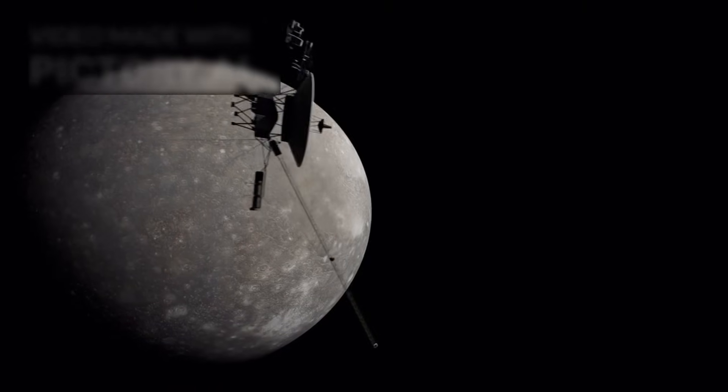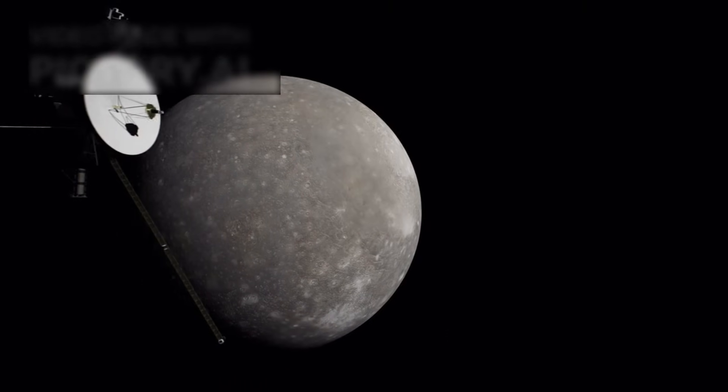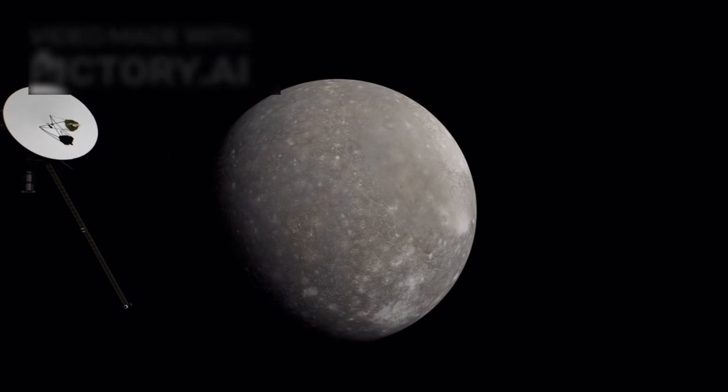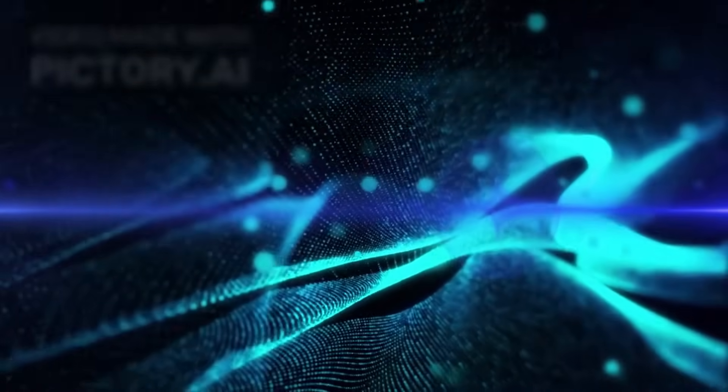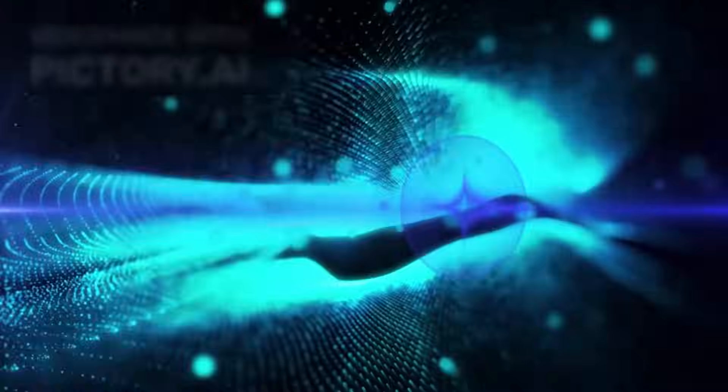In 2012, after 35 years in space, Voyager 1 finally crossed that invisible frontier. Instruments onboard detected a sudden drop in solar particles and a spike in cosmic rays. The spacecraft had left the heliosphere and officially entered interstellar space.